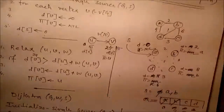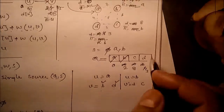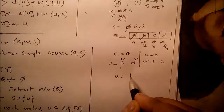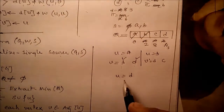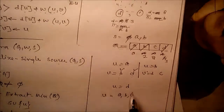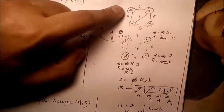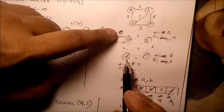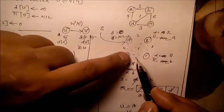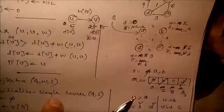While Q ≠ φ, extract next minimum: u = d. Adjacent of d are a, b, and c. For a: d[a] = 0, no update needed. For b: no update required. For c: d[d] + 3 = 3 + 3 = 6, which is less than d[c] = 8, so update d[c] = 6, parent[c] = d. The relax function handles this update.